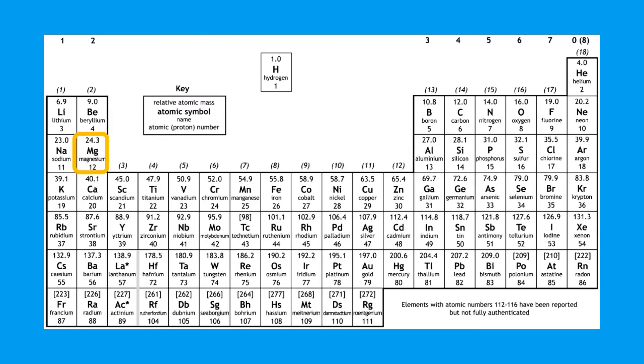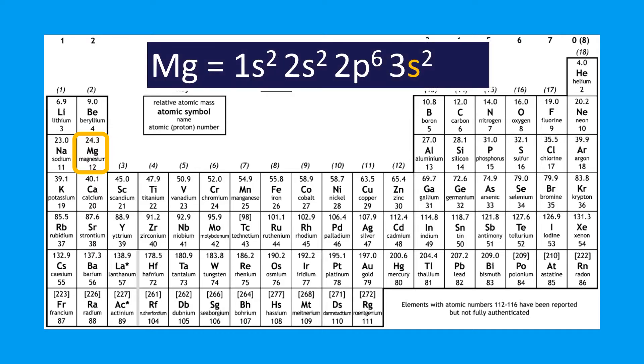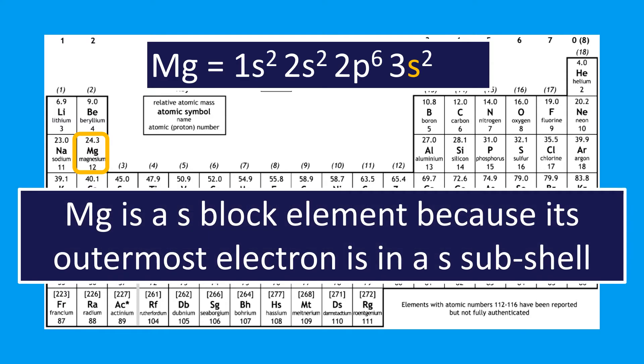If we look at magnesium, the electron configuration is 1s² 2s² 2p⁶ 3s². Magnesium is an s block element because its outermost electron is in the s subshell — it's an s block element.